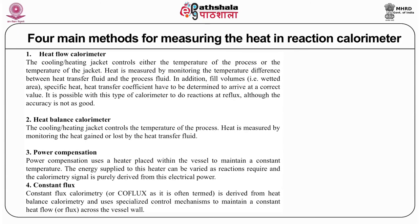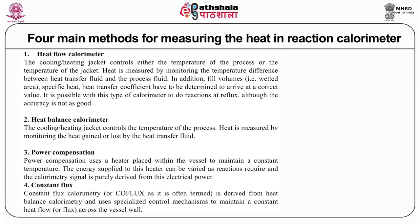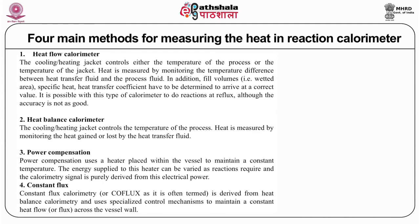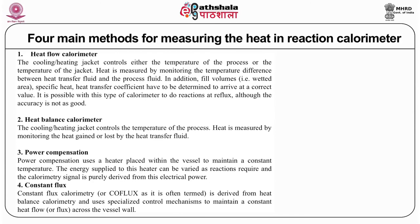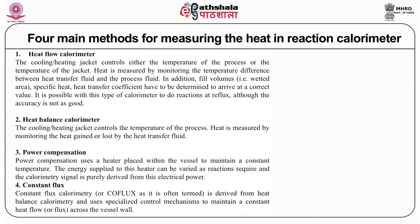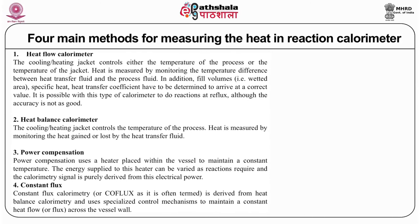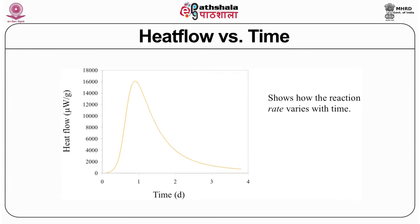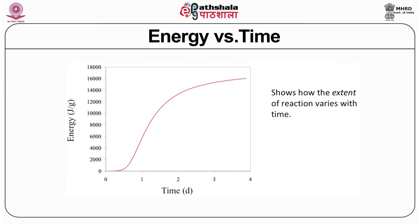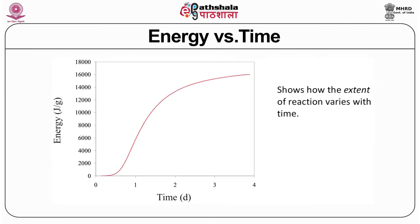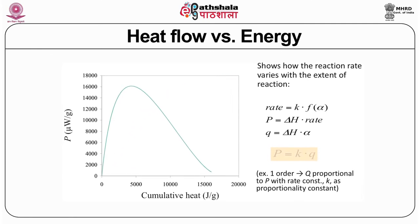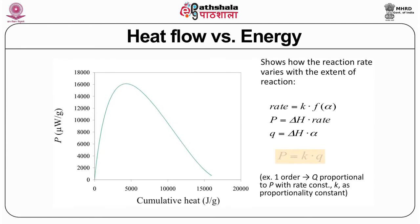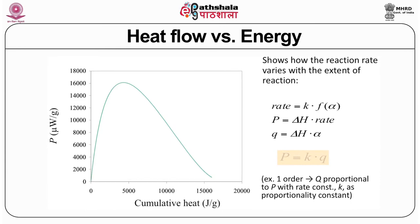The fourth type is constant flux calorimetry, also called co-flux, which is derived from heat balance calorimetry and uses specialized control mechanisms to maintain a constant heat flow across the vessel wall. It tells you how heat flow changes with time, showing energy versus time and heat flow versus energy. This can be expressed as P equals K times U, representing a first-order reaction.